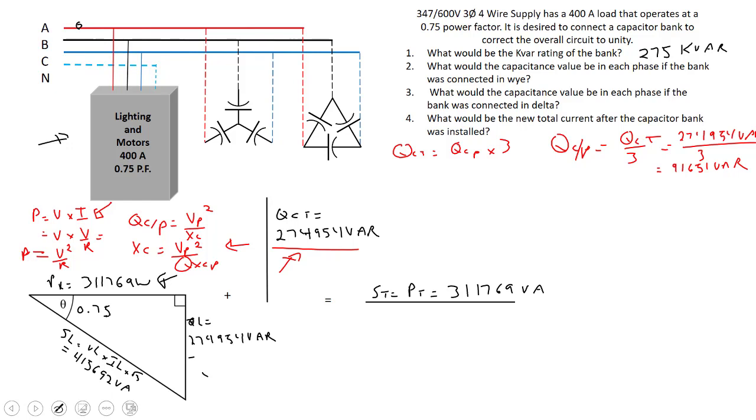We are ready now to use this equation and our VARs per phase to figure out what it would be in Y and delta. Let's go in Y. XC is going to equal our phase voltage squared divided by our VARs per phase from our capacitor bank. In this case our phase voltage in Y is root 3 less than 600. I'll use 346.4 volts for more accurate results.